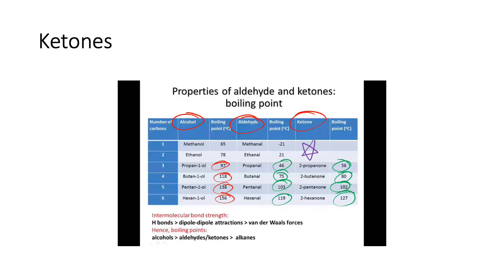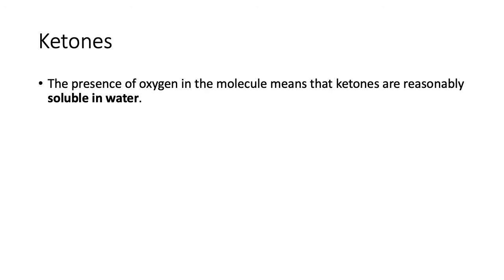Ketones are formed from the oxidation of secondary alcohols, which means the alcohol group is in the middle of the chain. This means you need a chain longer than three carbons — otherwise you'd just have a primary alcohol and would make an aldehyde instead. That's why there are no very small ketones.